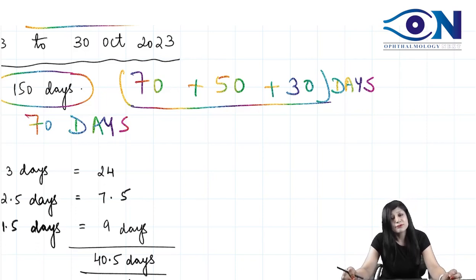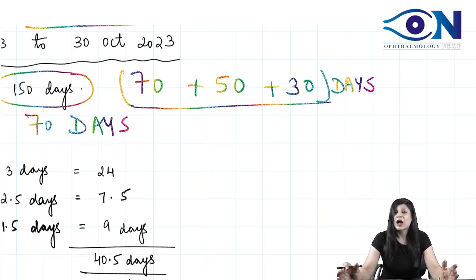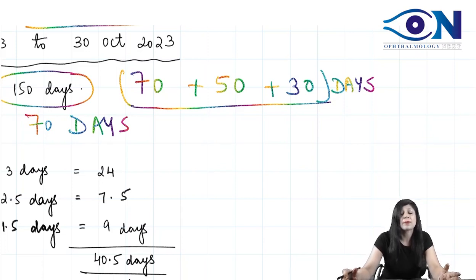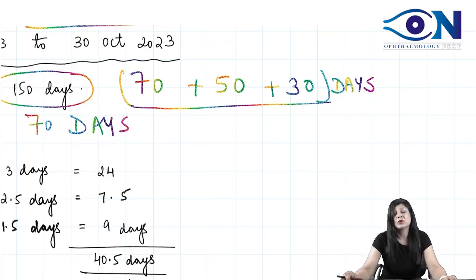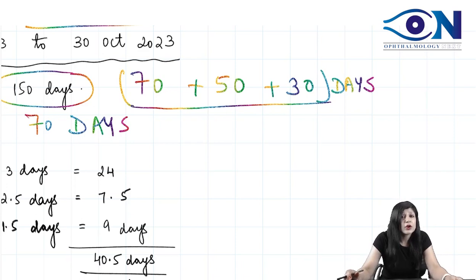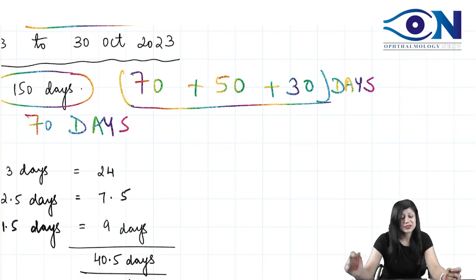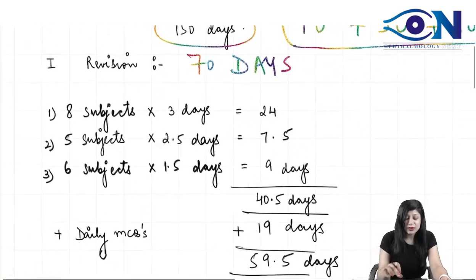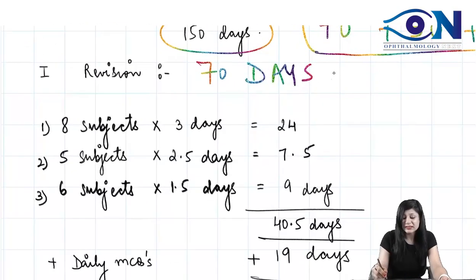Three revisions are actually sufficient and required for your final paper. The first revision is 70 days, the second is 50 days, and then 30 days. After 30th October you will have about 10 to 15 days, since the paper is usually in mid-November, and that period you can utilize again for revision of your volatiles, images, and PYQs.